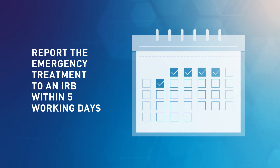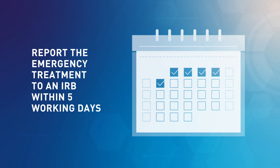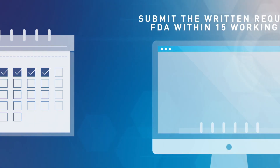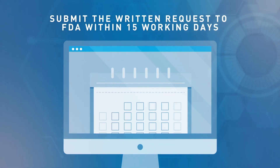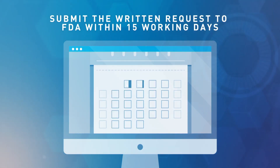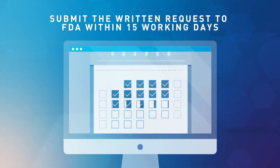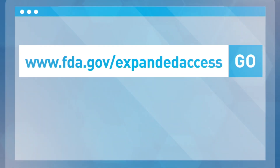You must report the emergency treatment to an institutional review board within five working days and submit the written request to FDA within 15 working days of the initial authorization. An emergency IND timeline is available on the FDA website to guide you through the process.